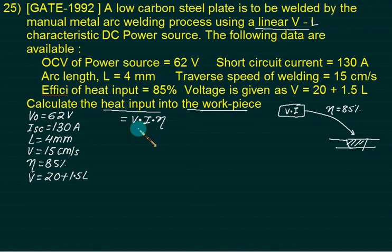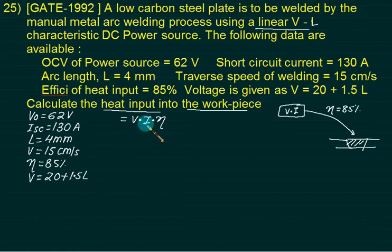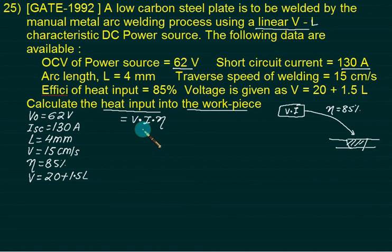Right now I have two unknowns: one is V and one is I. V I can calculate because I know the value of L. Now, I will be left with I. But I have one standard equation of V0 and Isc. That is V upon V0 plus I upon Isc equals 1. So indirectly this value is known to me.